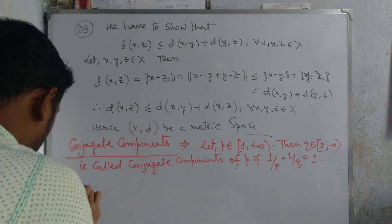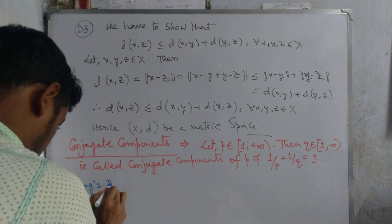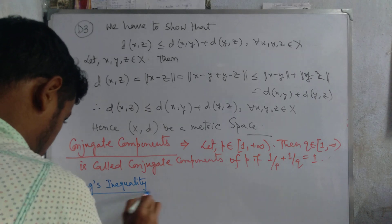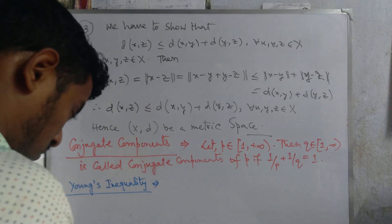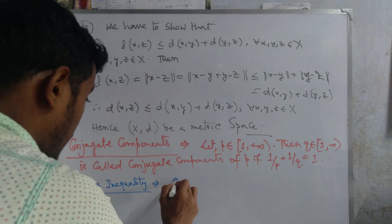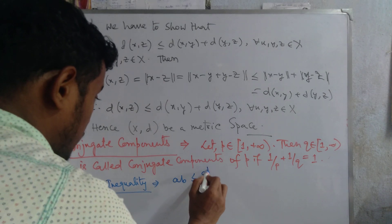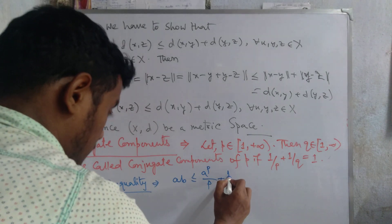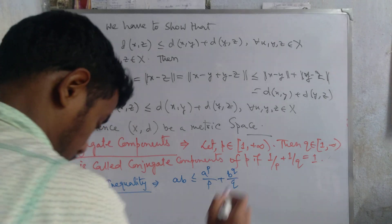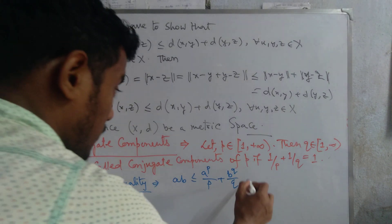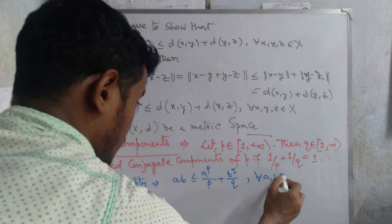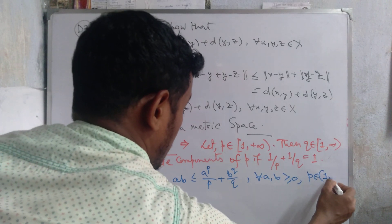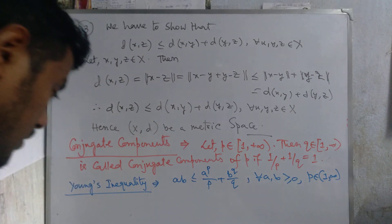Now we write Young's inequality: a·b ≤ aᵖ/p + bᵠ/q, for all a, b ≥ 0 and p belonging to (1, ∞).